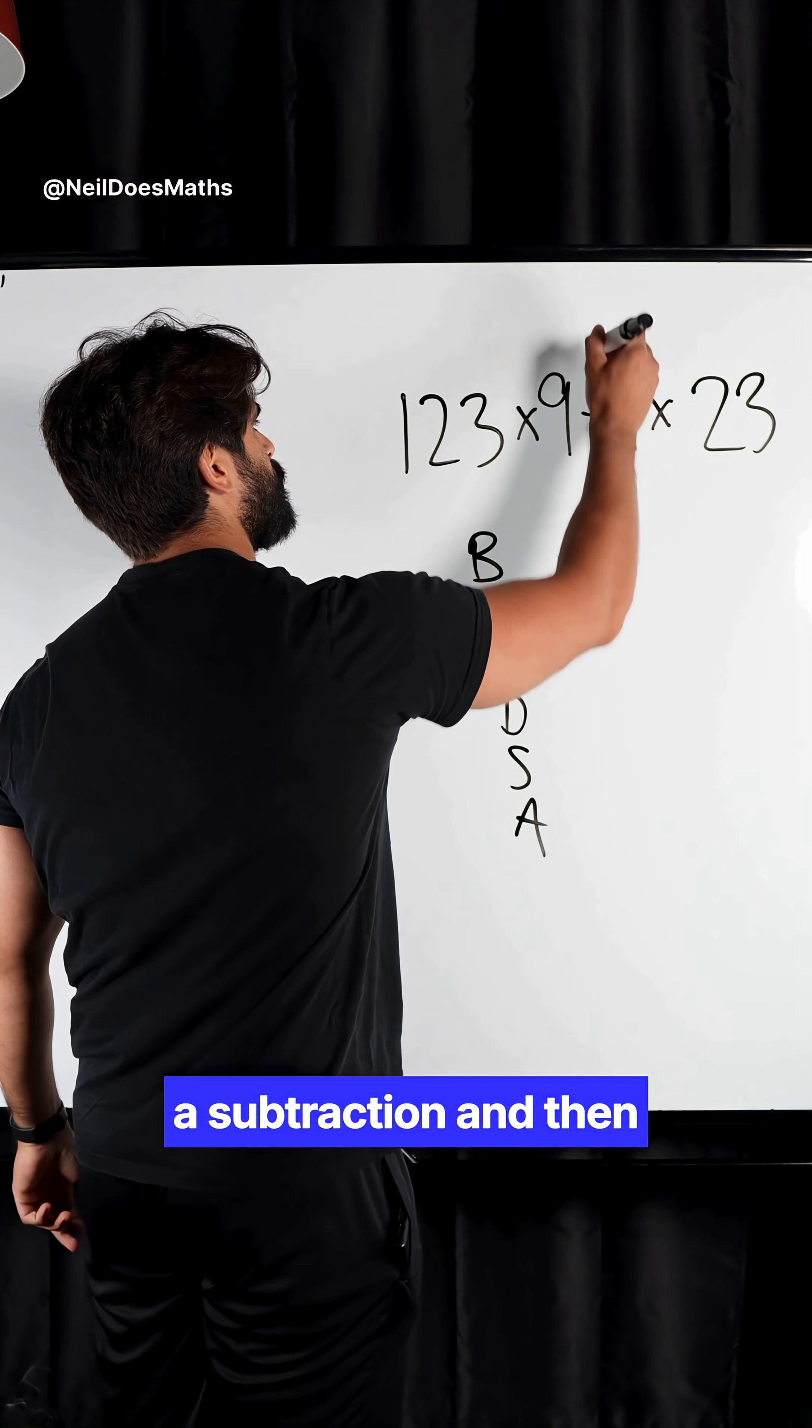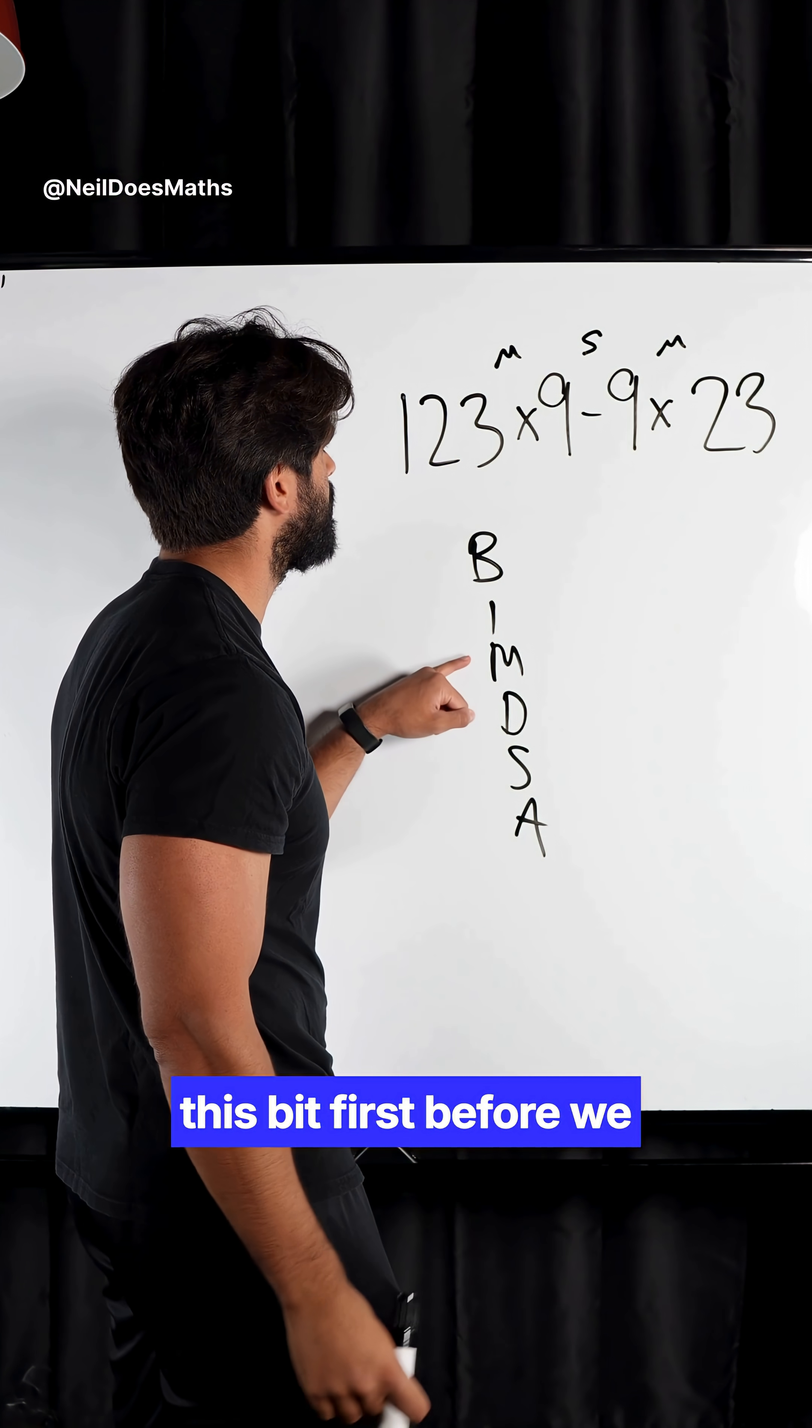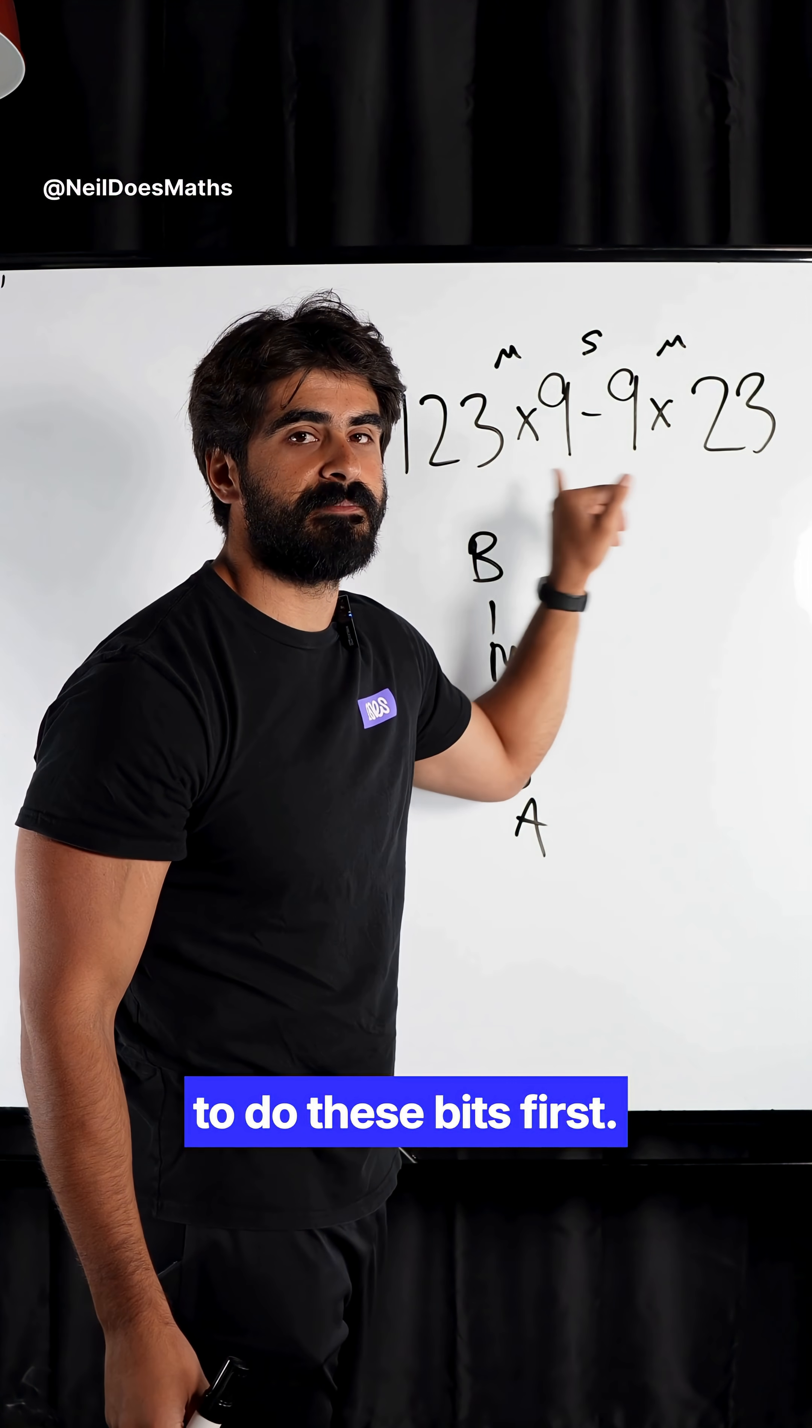Now, in this case, we have a subtraction and then we have multiplication. We actually need to do this bit first before we can do the subtraction. So even though this is the highlight and you think it's zero, we need to do these bits first.